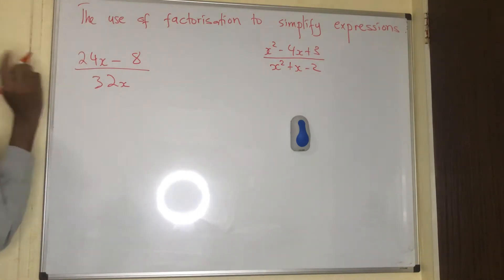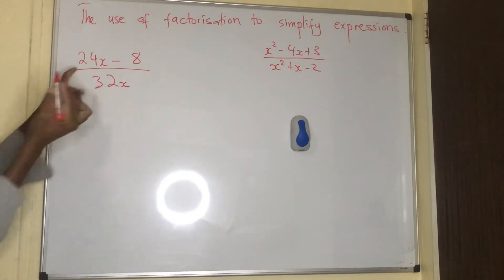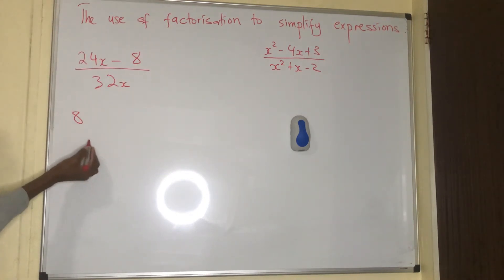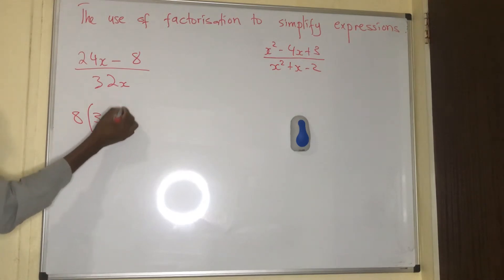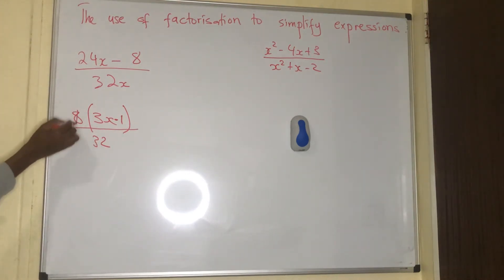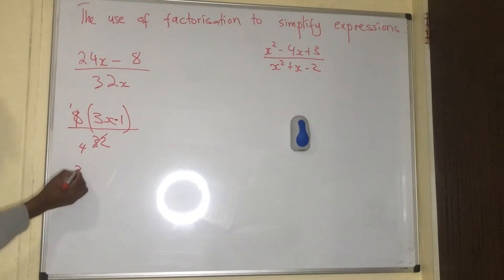We look at 24x minus 8 over 32x. What is the common factor between 24x and 8? I can put 8 and I'll say 8 into 24x, that's 3x. 8 into 8, that's 1. 8 into 32, that's 4. At the end, you are going to have 3x minus 1 over 4. That is the answer.